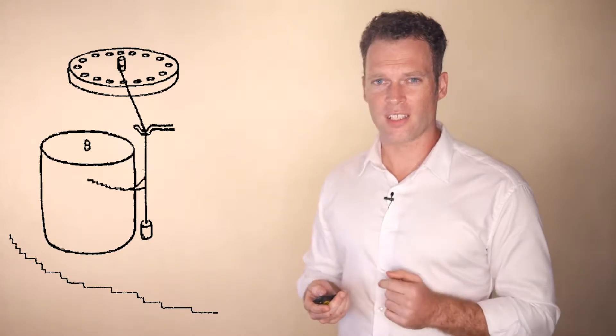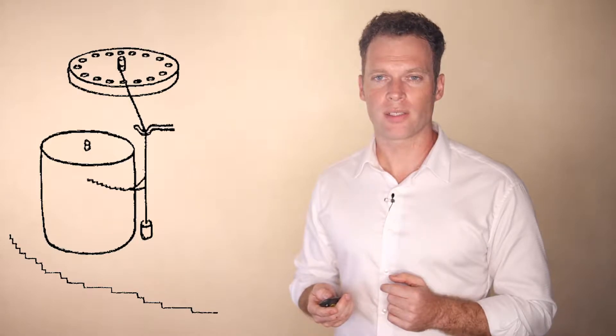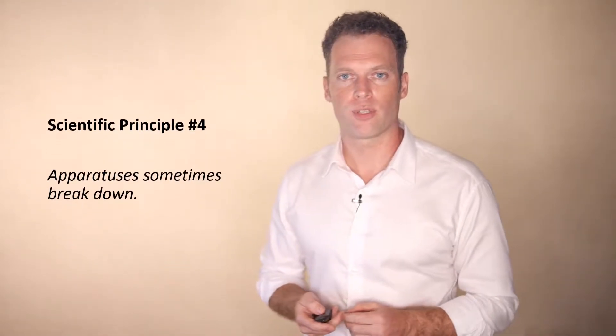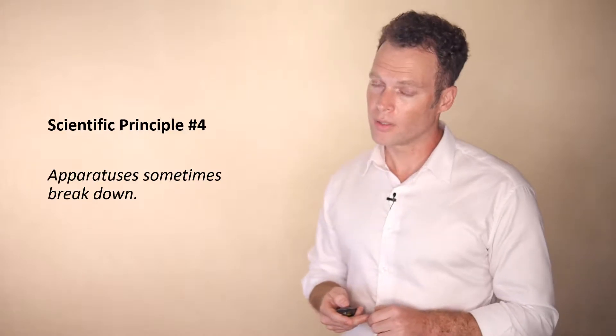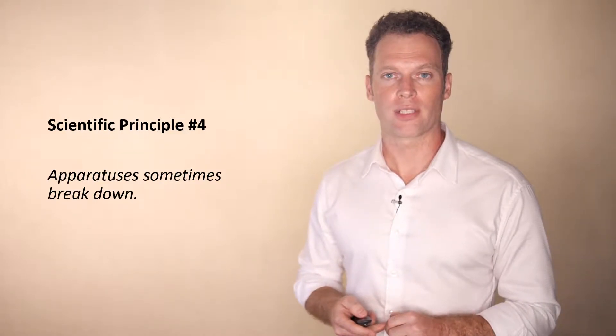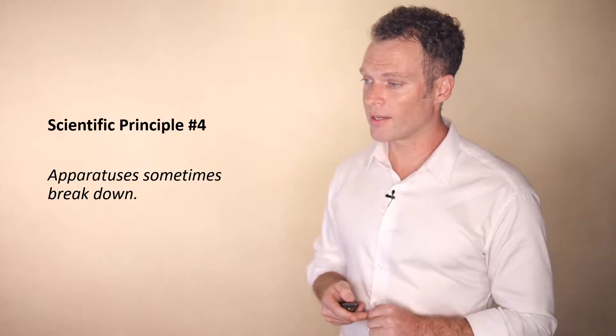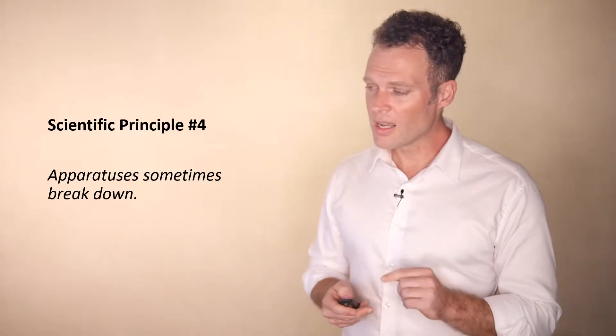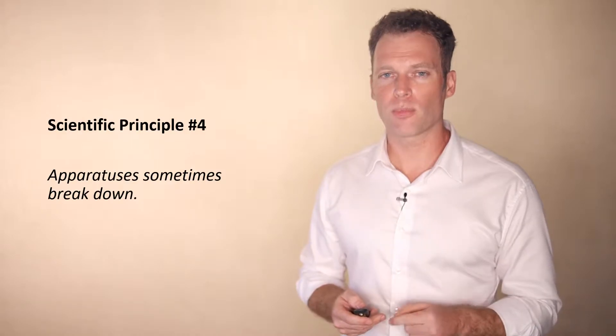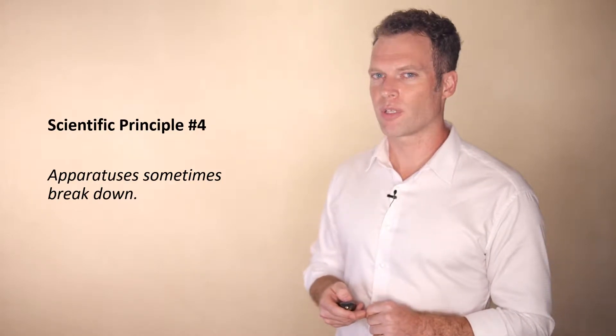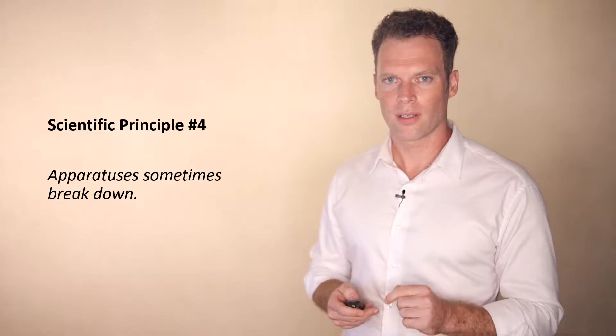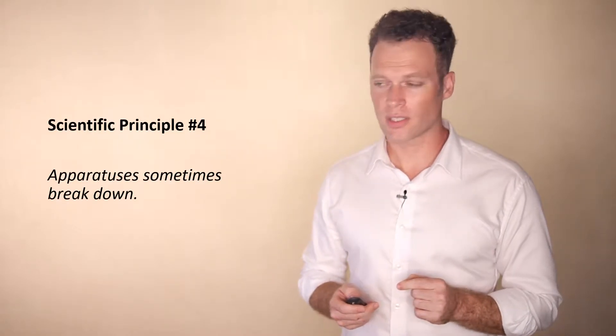But being as complicated as this device was, it eventually broke down. And that led him to scientific principle number four: sometimes your measurement instruments don't work as intended. Sometimes they break down. Now in this case, he almost immediately reverted back to scientific principle number three. That sometimes scientists are just lucky.